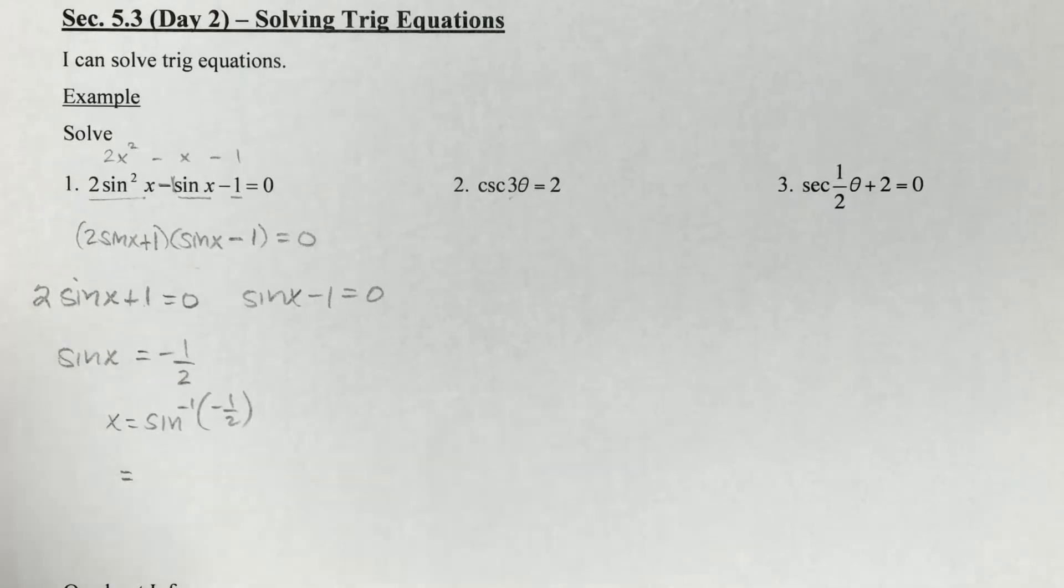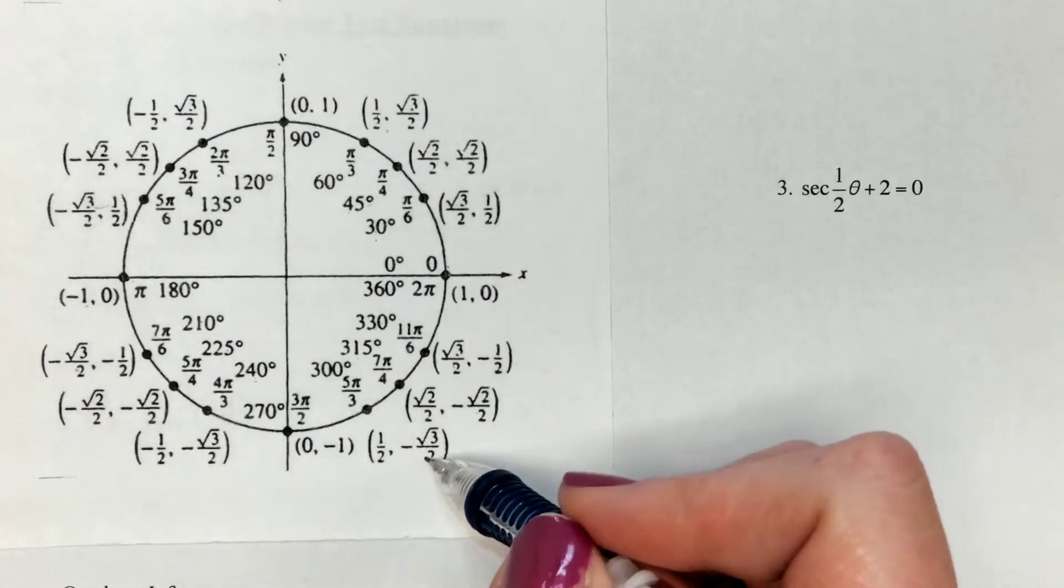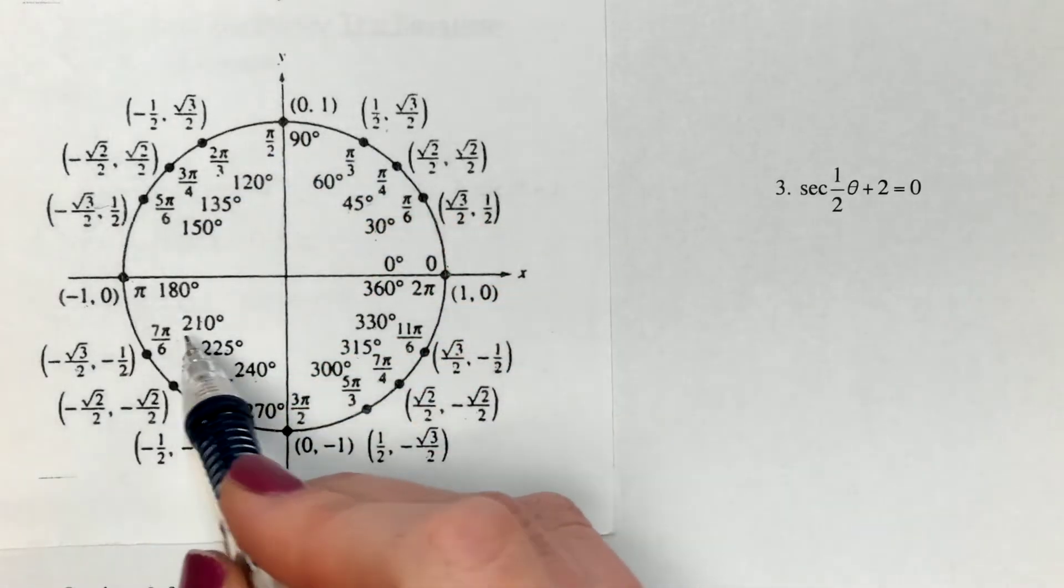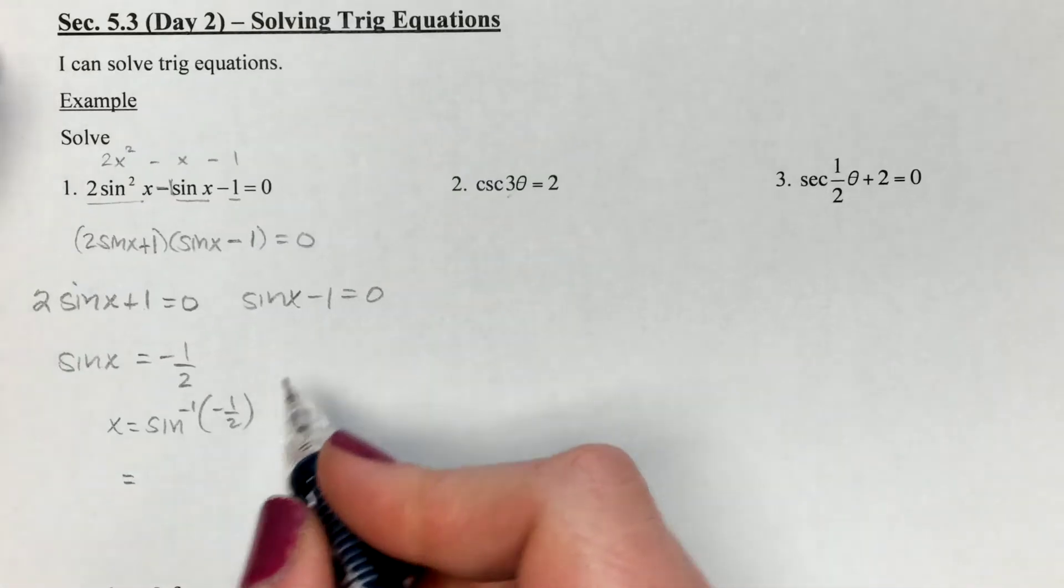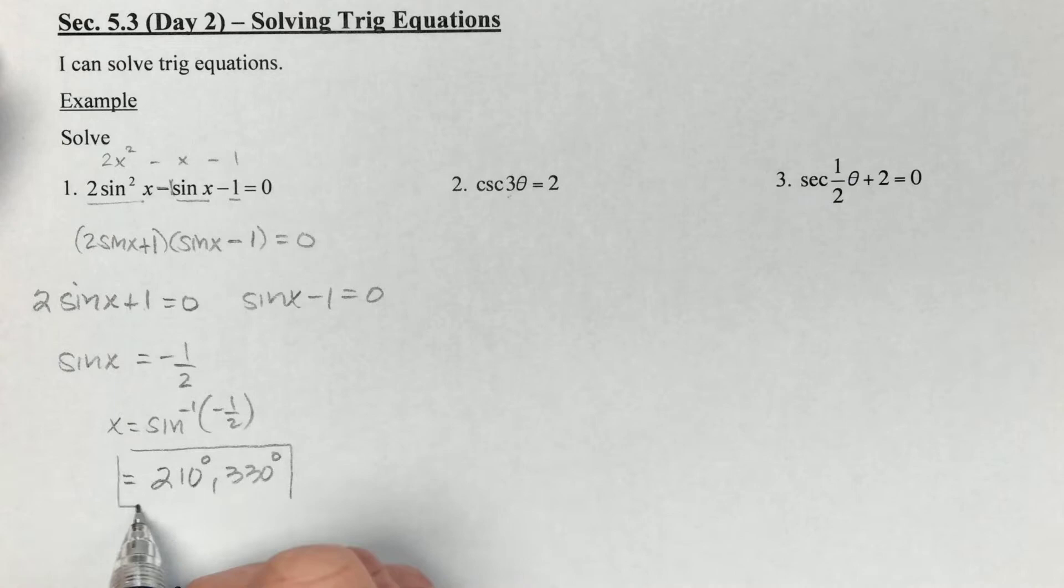What we're doing is looking for all the angles that have a sine of negative half. Grabbing my unit circle, looking around for any sine values of negative half, there's one and there's the other. So we've got 210 and 330 degrees.